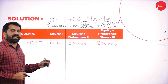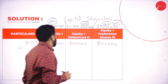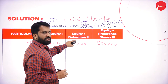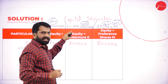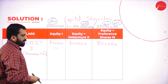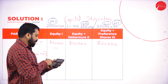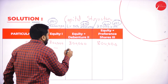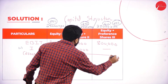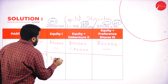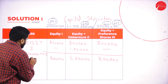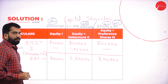Now, minus interest. For equity, there is no interest. For debentures, interest = 25 lakh × 6% = Rs. 1,50,000. For preference shares, we don't calculate interest — it's zero. So: EBT for Alternative 1 = 8 lakh − 0 = 8 lakh. EBT for Alternative 2 = 8 lakh − 1,50,000 = 6,50,000. EBT for Alternative 3 = 8 lakh − 0 = 8 lakh. This is called EBT (Earning Before Tax).